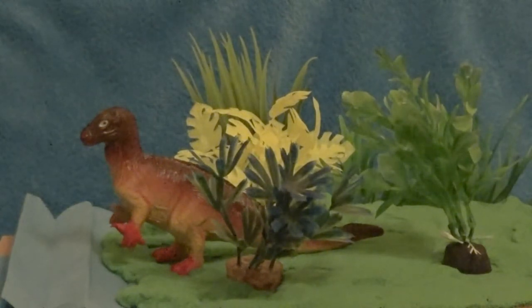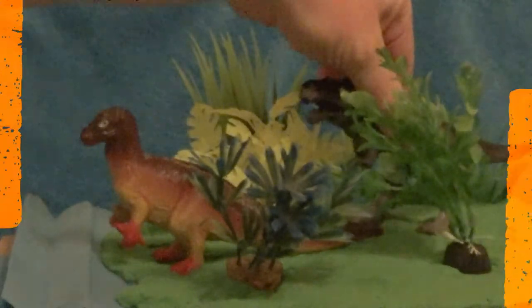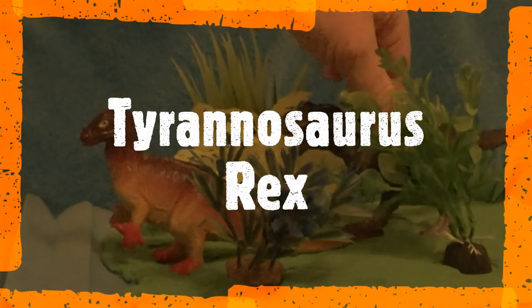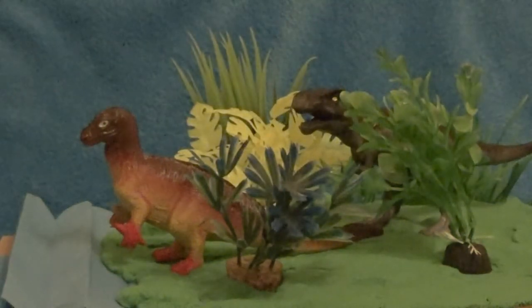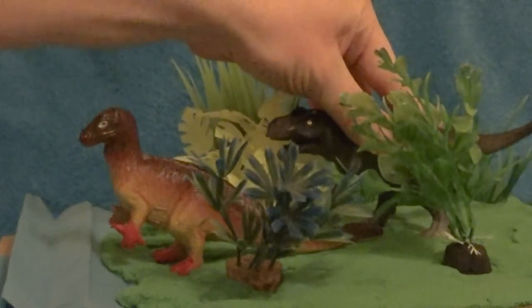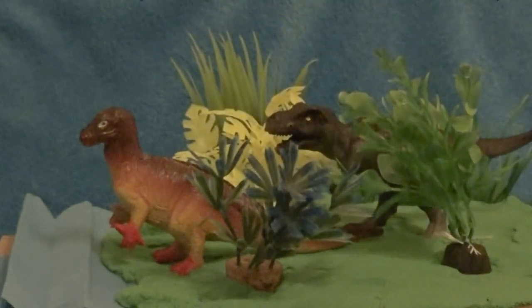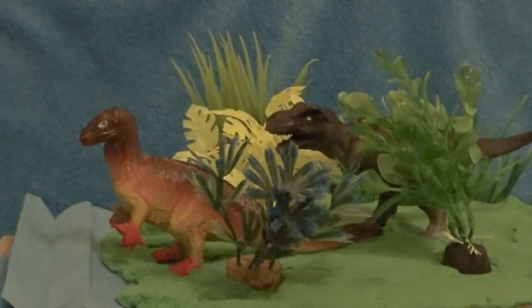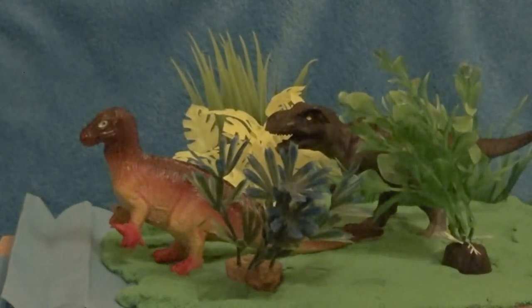We can have it so that Tyrannosaurus rex is sneaking up behind Iguanodon. What's neat about the kinetic sand is I can push him right into the sand so that he stays put. Now you can use your imagination and explain to people what's going to happen in this scene — does Tyrannosaurus rex get the Iguanodon, or does Iguanodon escape?